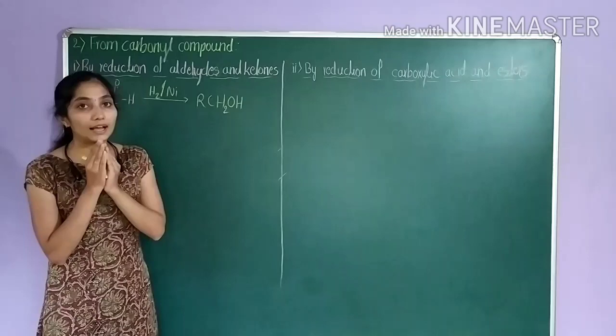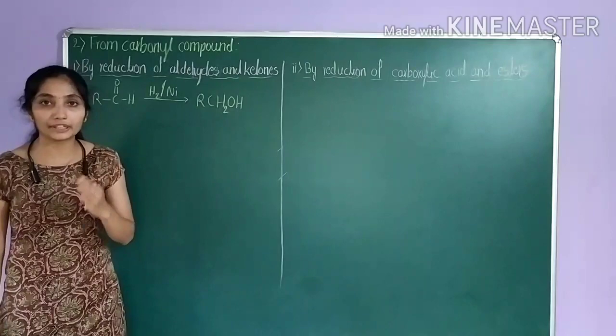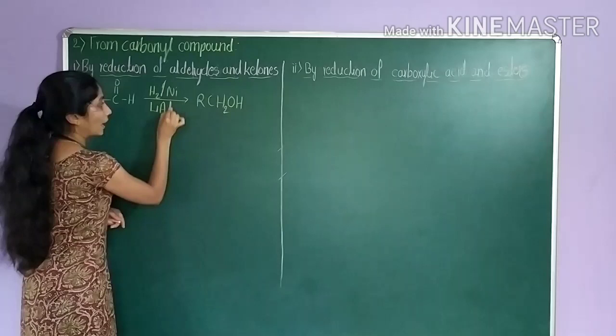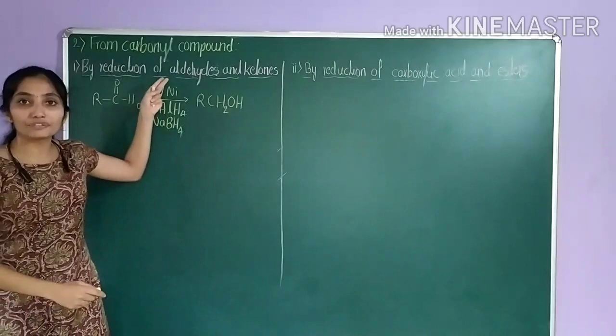In the exam, they will ask you to write the reaction for catalytic hydrogenation of aldehyde. Instead of hydrogen in presence of nickel catalyst, you can also use reducing agents such as lithium aluminium hydride (LiAlH4) or sodium borohydride (NaBH4). You can use any one of these three reagents to convert aldehyde into the corresponding alcohol.